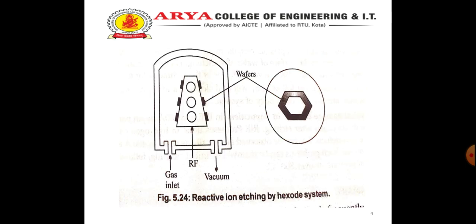The second system is the hexode system. In the hexode system, the side wall itself acts as the neutral electrode, so the potential difference between the plasma and the power electrode is increased, and hence it increases the energy of ion bombardment. For anisotropic etching of silicon, chlorine-based plasma is frequently used. Chlorine-based plasma is also used to etch gallium arsenide and aluminum-based metallization. Fluorinated plasmas can also be used under RIE conditions.